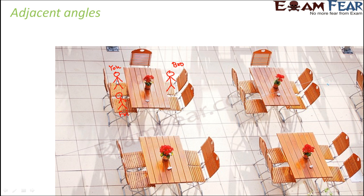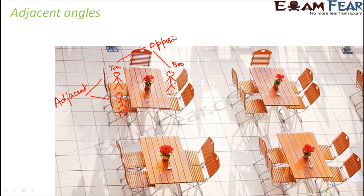When you look at it, you and your friend are sitting next to each other — sitting beside each other. Both you and your friend are on the same side of the table, whereas you and your brother are sitting on the other side of the table, that is, you are sitting opposite to each other. So whenever two persons are sitting next to each other, they are said to be adjacent, and when two persons are sitting opposite to each other, they are said to be sitting opposite to each other.